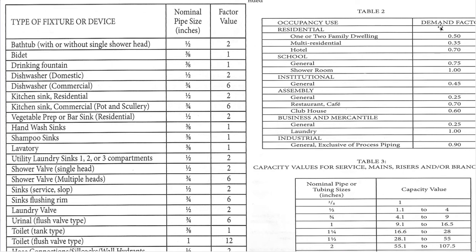In Table 2 you have the demand factor. Typically if you're sizing your own stuff it's probably a one or two family dwelling. So you take your factor value after you add up all your factors throughout the whole house or whatever you're sizing, and you're going to multiply it by 0.5. Some of the larger stuff will be engineered for you, but if you're going to add something on — maybe add a bathroom or laundry room — you'd have to know how to size it this way and plug these into the equation. For today we're going to use a one for one or two family dwelling as an example.